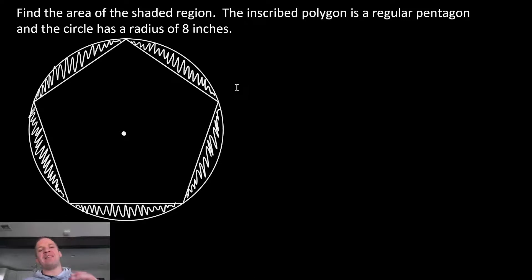What's up? Mr. Allen here. We're going to find the area of this shaded region here. The inscribed polygon is a regular pentagon, and the circle has a radius of eight inches. Regular polygons can be inscribed in circles, and what that means is each vertex lies on the circle, and this is a perfect illustration of that.